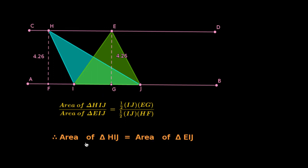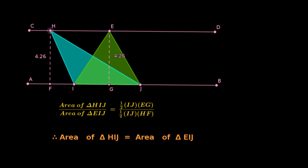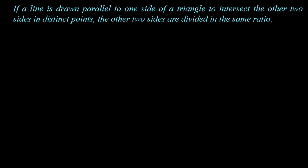One more important property to note: the altitude of an acute angle triangle lies inside the triangle, but the altitude drawn to the base having an obtuse angle in an obtuse angle triangle lies outside the triangle. Now let us learn the logical proof of Thales' theorem.